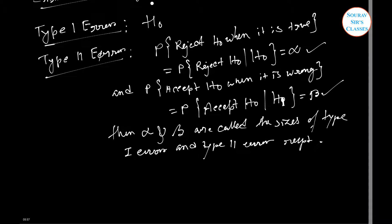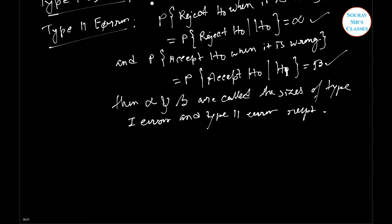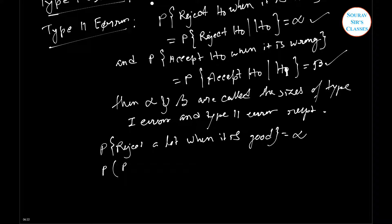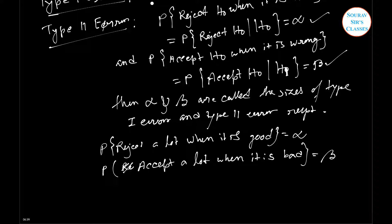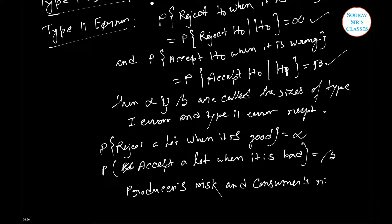In practice, Type I error amounts to rejecting a lot when it is good, and Type II error may be regarded as accepting the lot when it is bad. Thus, P(reject a lot | it is good) = α, and P(accept a lot | it is bad) = β. Here α and β are referred to as producer's risk and consumer's risk respectively.